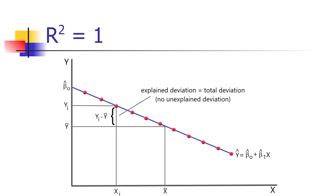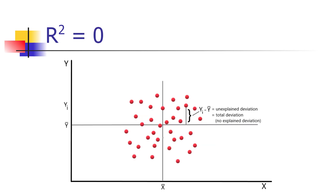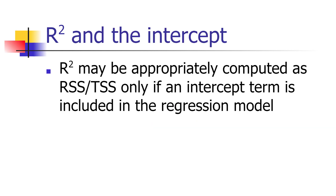Here are some examples. When all the deviations are explained and all points fall on the line, you get an R-squared of 1. An R-squared of 0 occurs when there's no pattern and the regression explains none of the deviations. One important thing: R-squared is only computed as RSS over TSS when you include an intercept in the regression. You should always include an intercept term unless there's a compelling reason not to — if the true value is 0, you can test for that. Without the intercept, R-squared and many other statistics won't have any meaning.